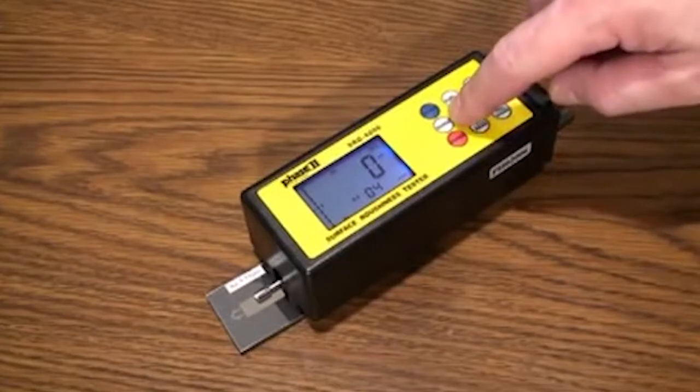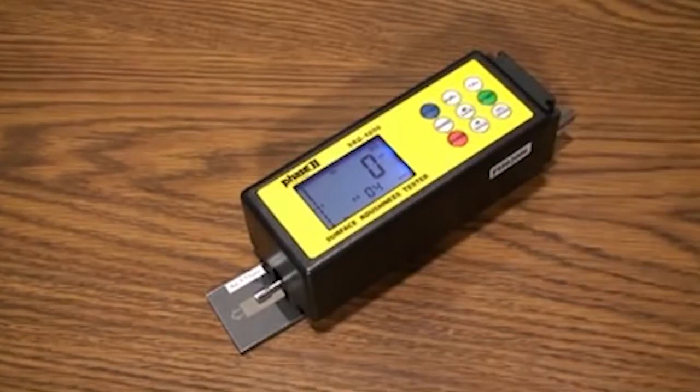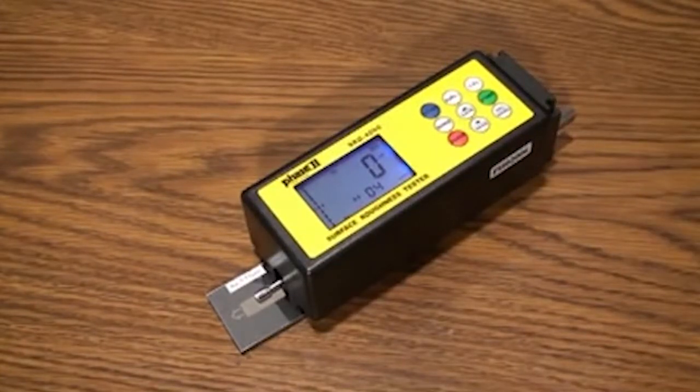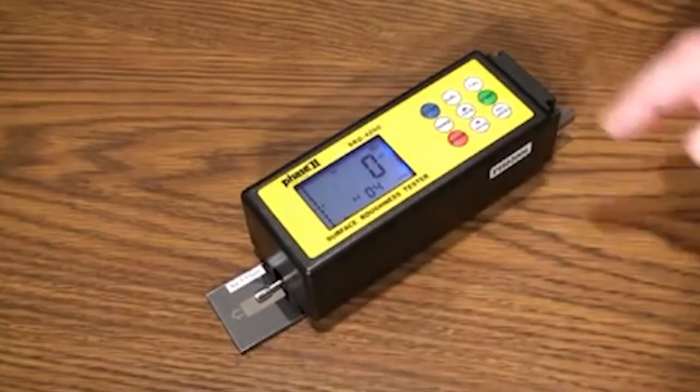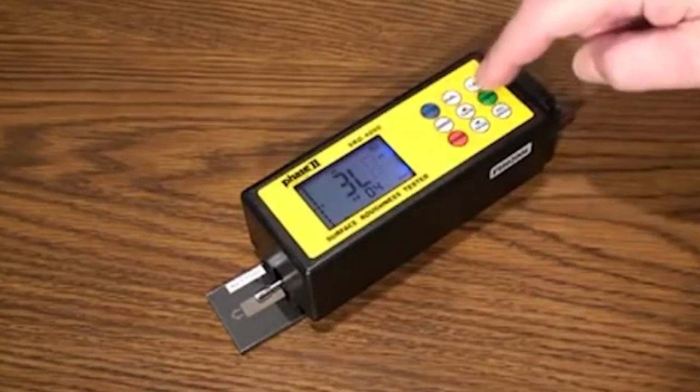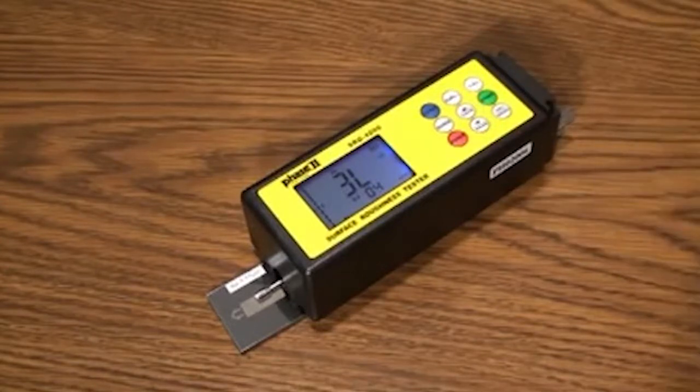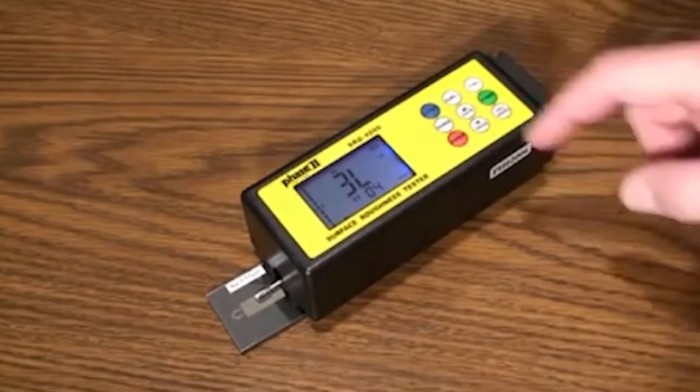Range is the amount of consecutive cutoff lengths to be evaluated in a given test. Press Range and then adjust to your preference using the up and down arrows. Once you have selected your value, press Range again to save it.